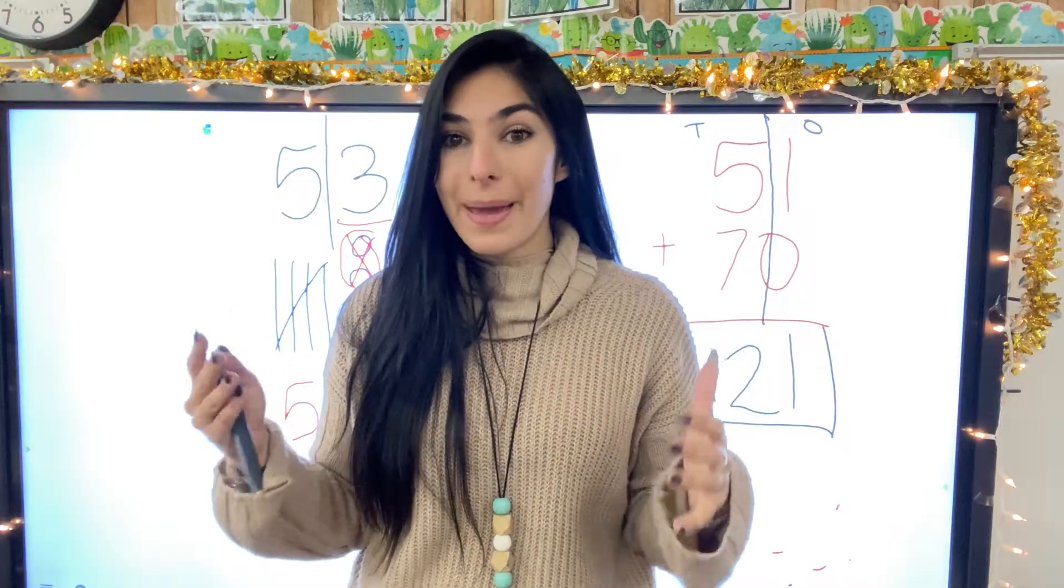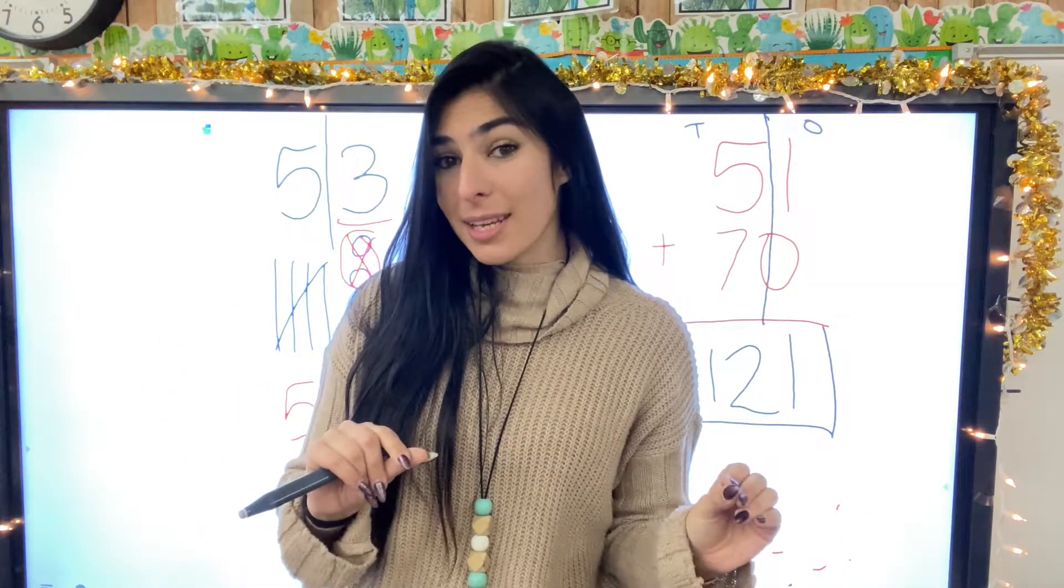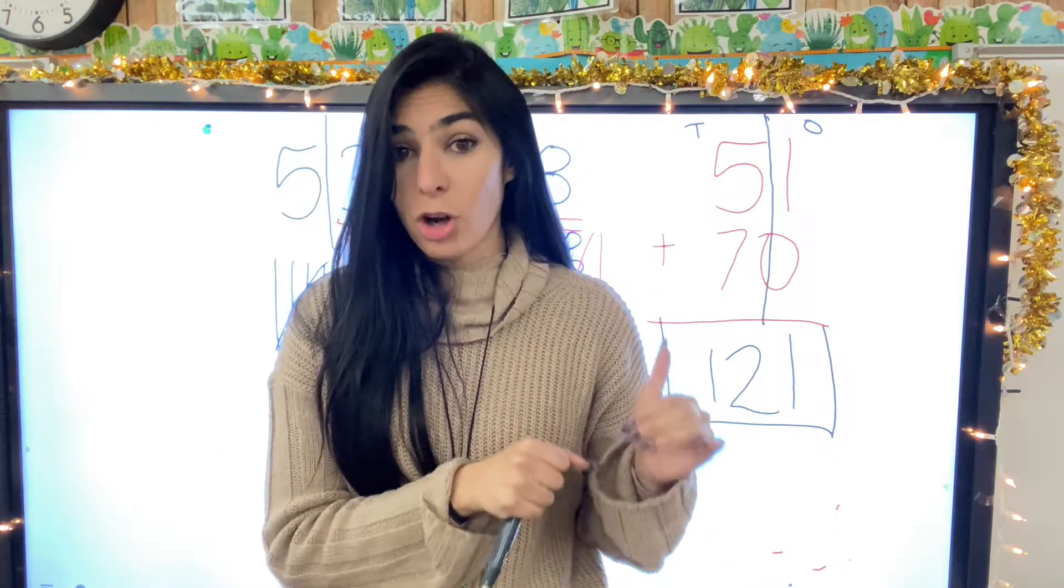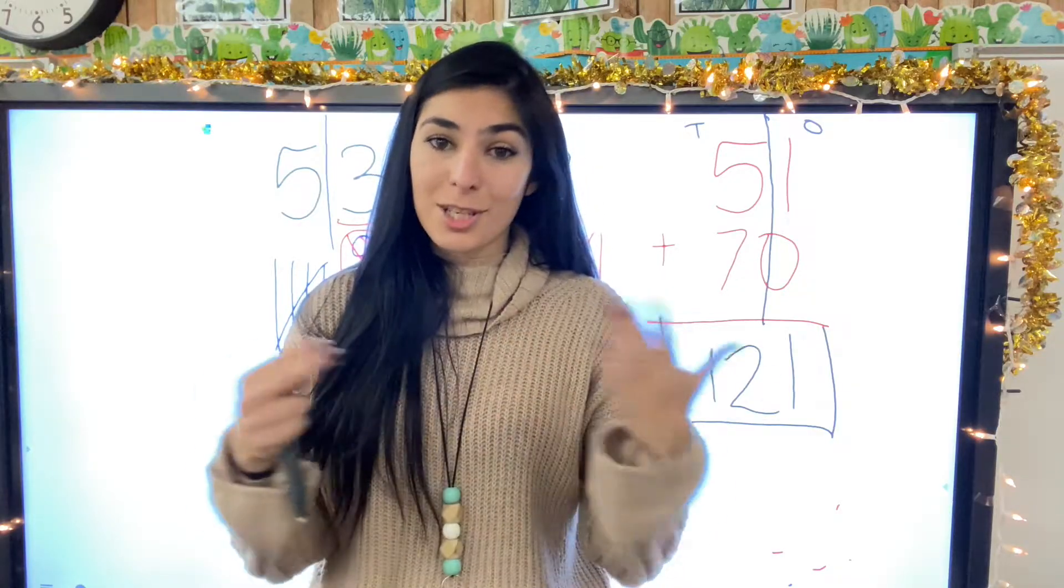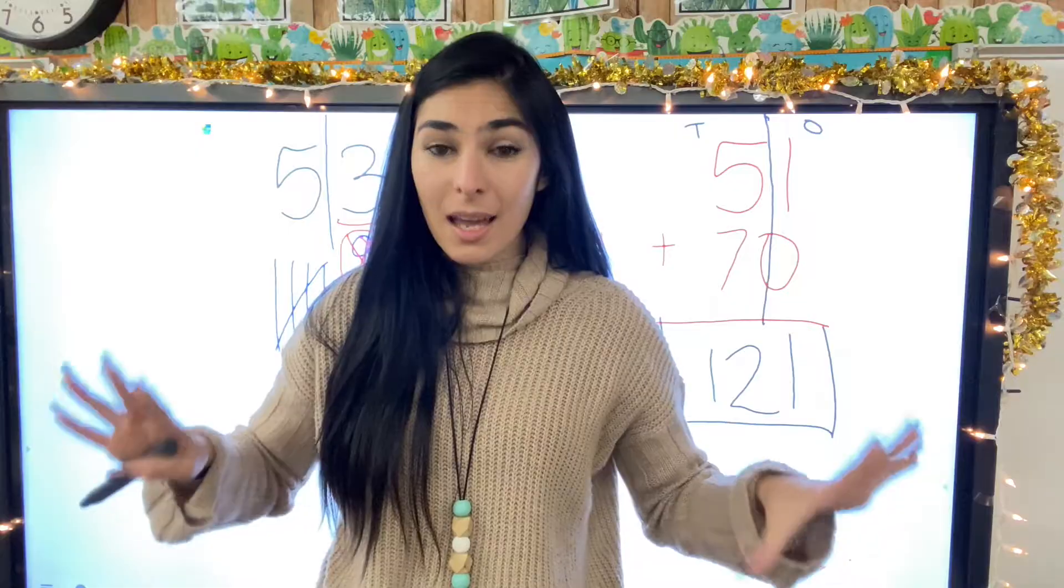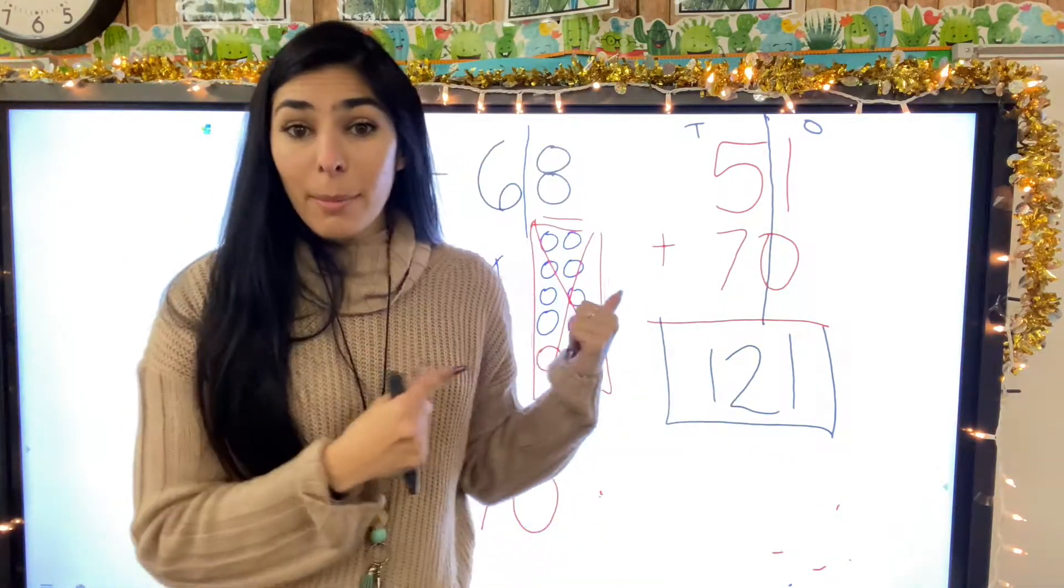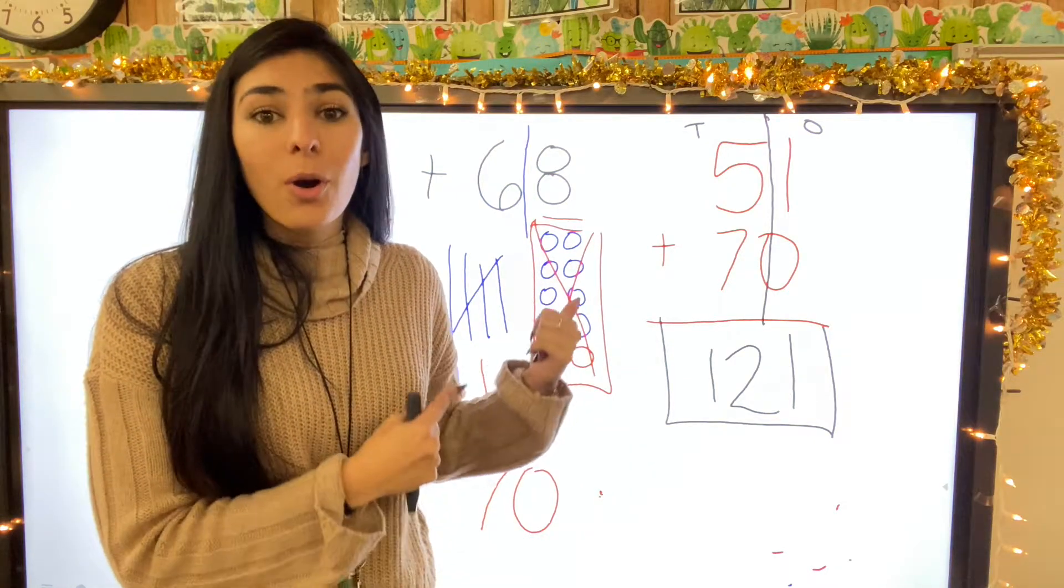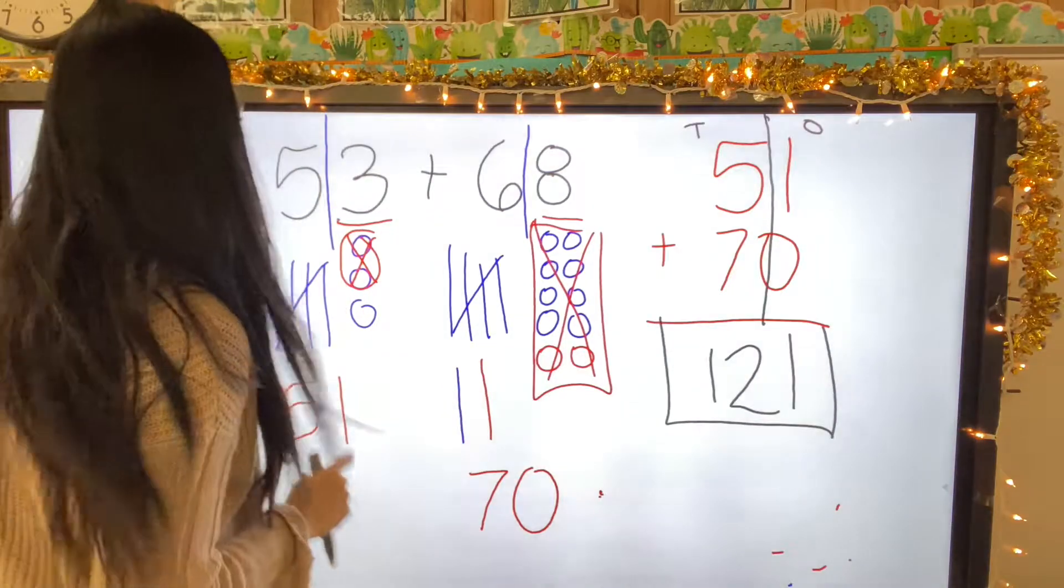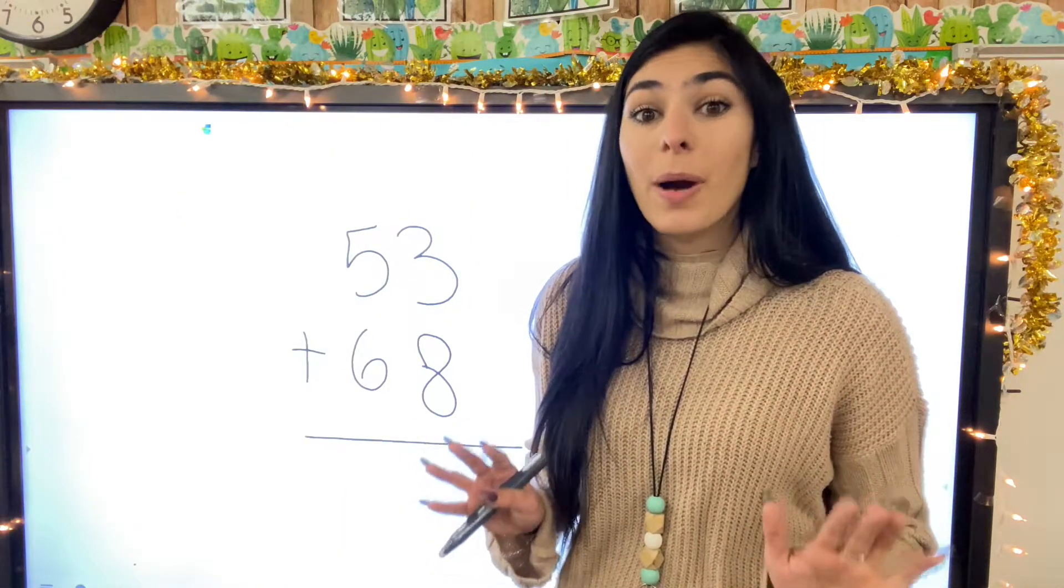So this is how we regroup with base ten models. We can regroup without that. And in fact, I actually think it's a lot easier, but I definitely wanted to show you guys this because this is what you're going to be seeing on your common core math and you need to know what it means in order to make sense of it. So now that we've done that, I'm going to go and show you the basic vertical two-digit addition where we are going to regroup.